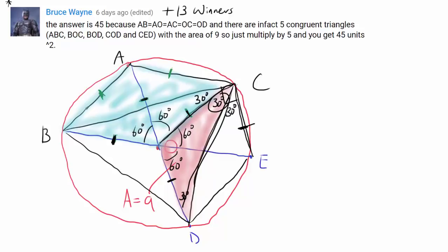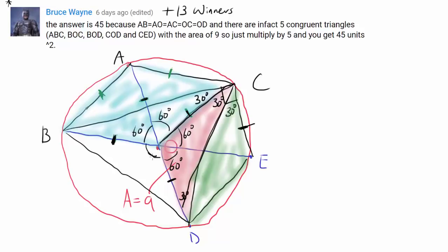By side-angle-side, we have triangle OCD congruent to triangle ECD — so another congruence is established, and we know this triangle is congruent also. Finally, we wish to show triangle BOD is congruent to the rest. We know this angle is 120 degrees, using the fact that a line is 180. By SAS, we have another congruent triangle.